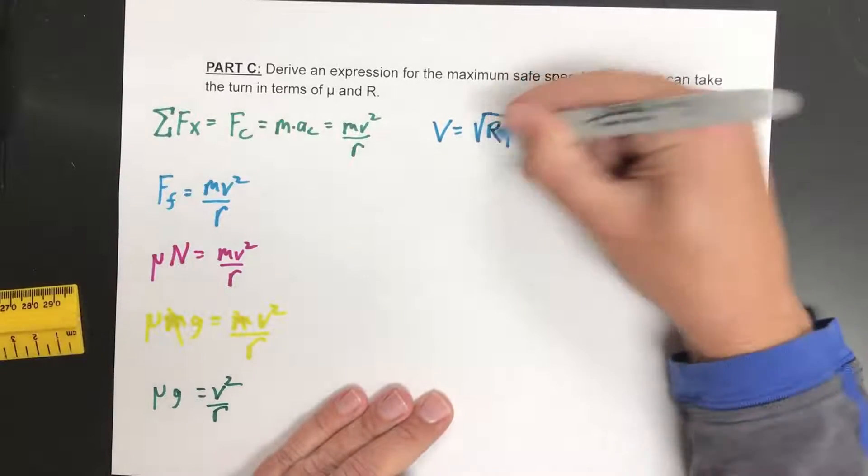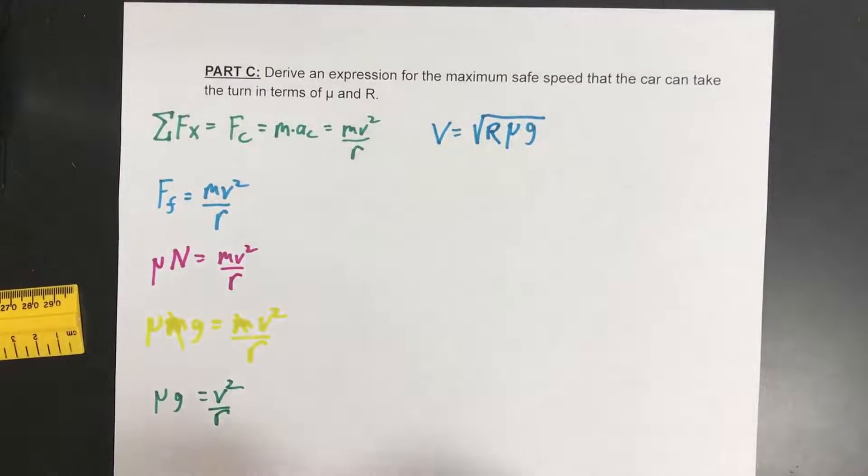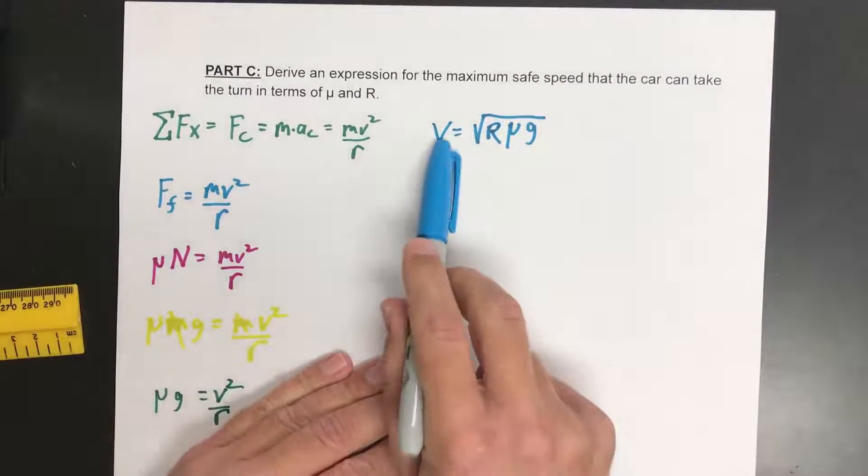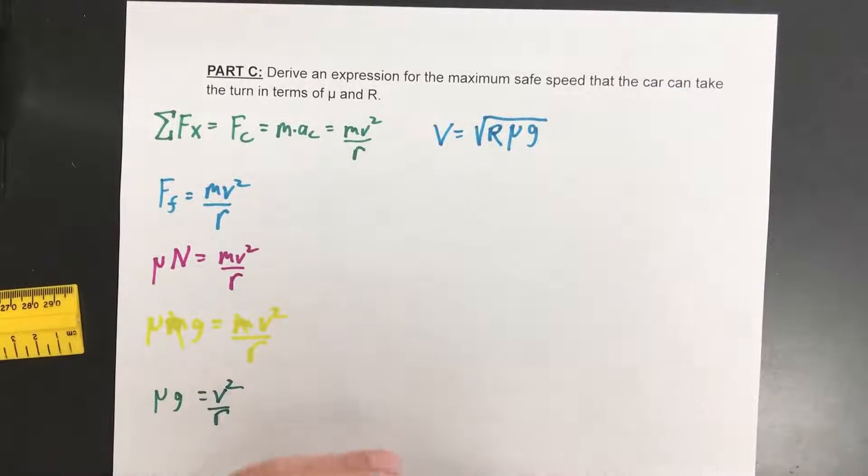And again, let's call it capital R because that's what they call it. So it looks kind of like rug there. So the velocity is equal to the square root of rug.